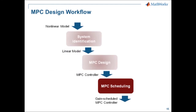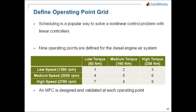After finishing MPC control design for each operating point, we implement the gain-scheduled MPC controller inside the Simulink environment and validate it against the diesel engine plant model running in GT Power. Gain-scheduling is a popular approach to solve a nonlinear control problem with a set of linear controllers. We identified nine operating points dividing the diesel engine operating space into low, medium, and high speed versus low, medium, and high torque, with one MPC designed and validated for each operating point.